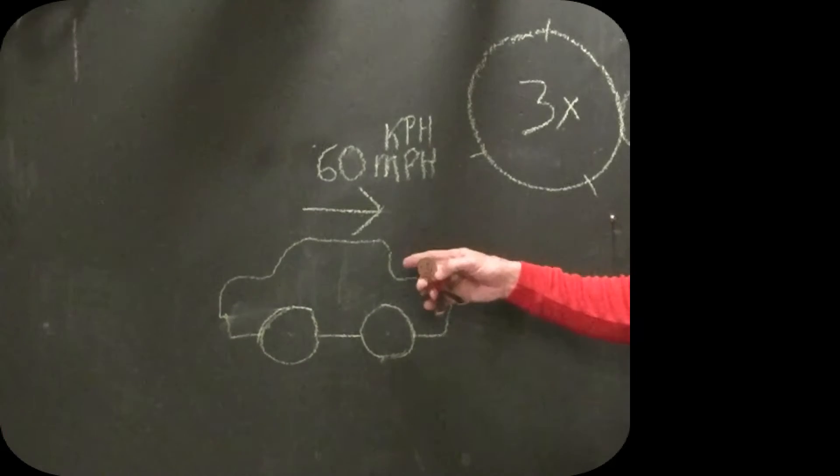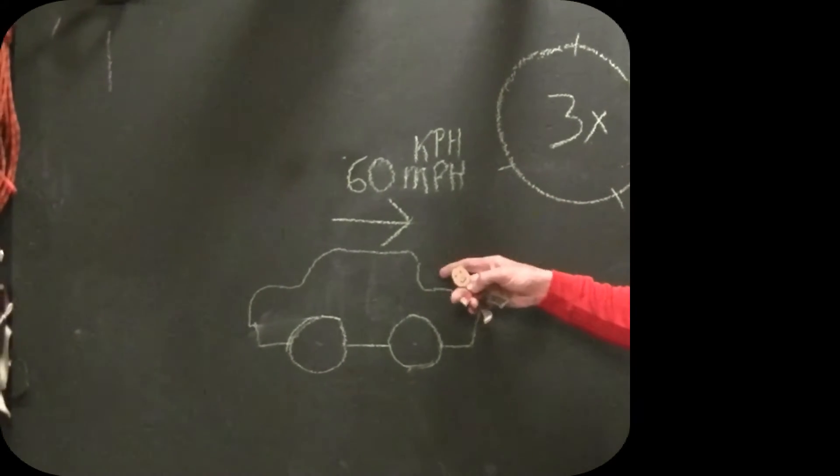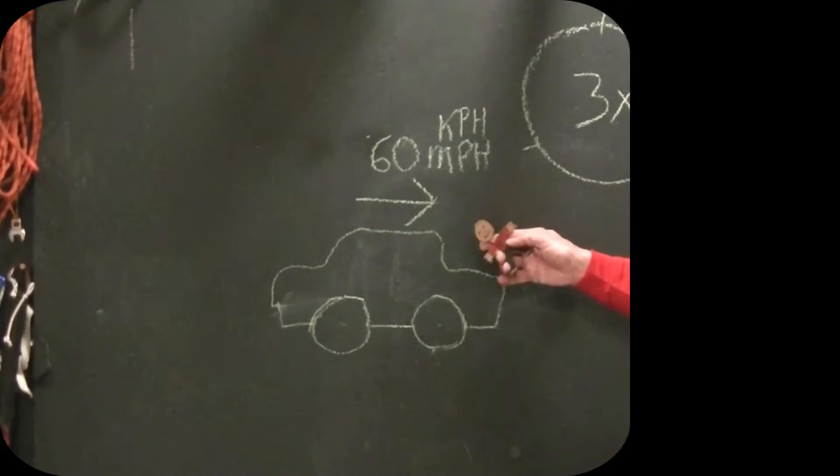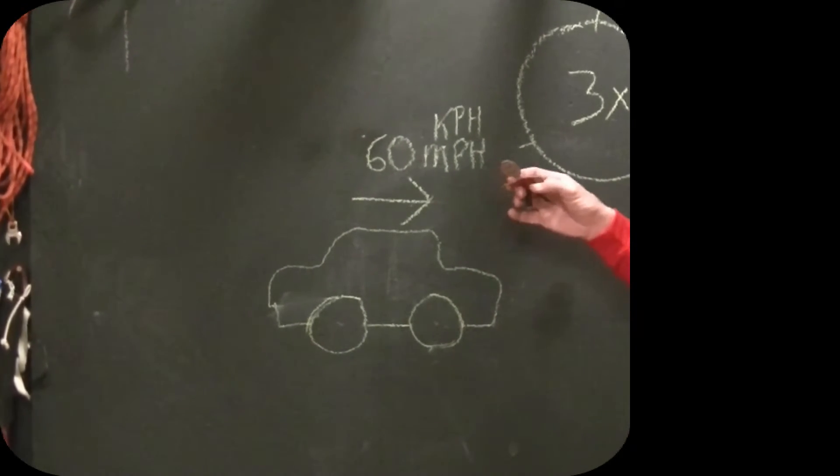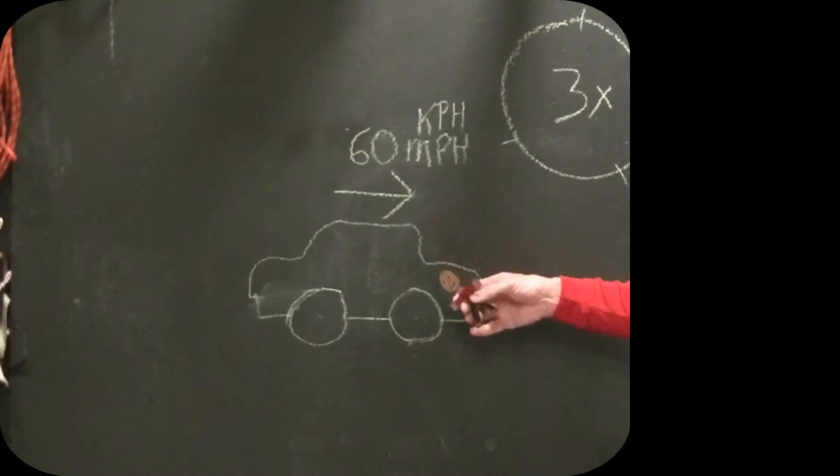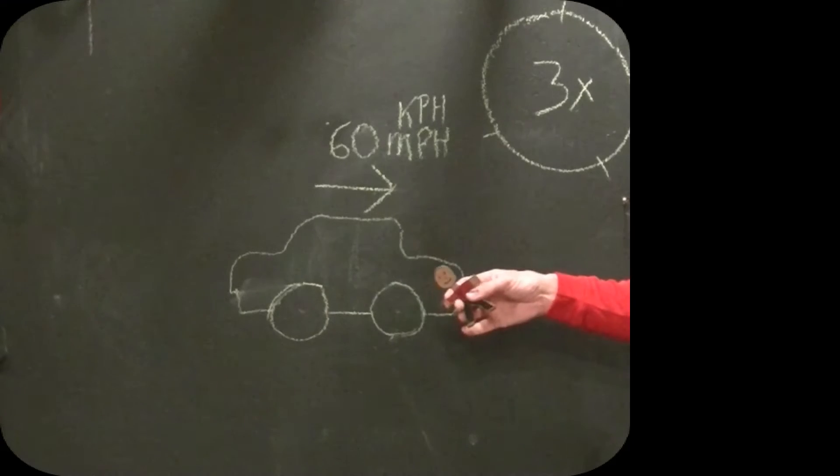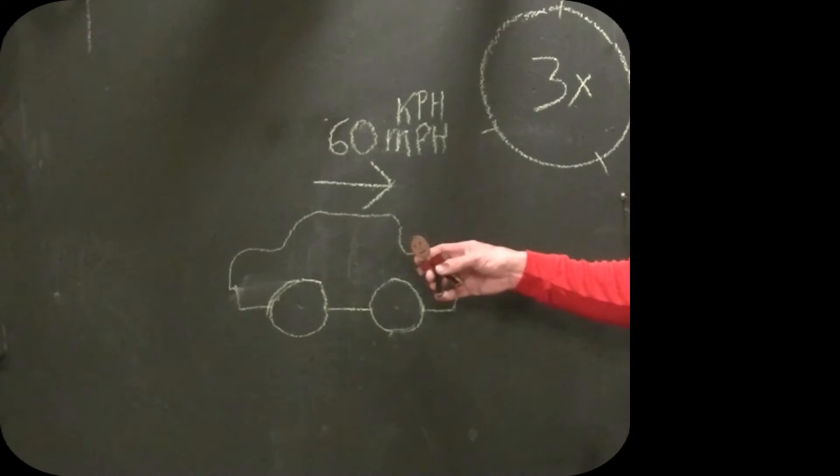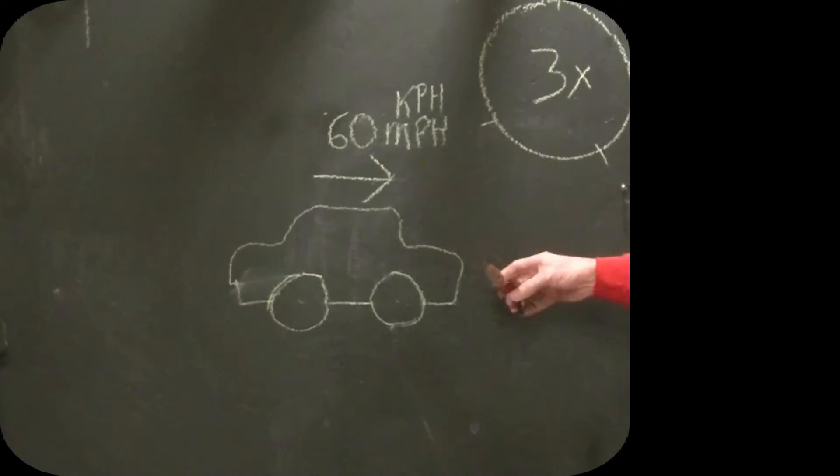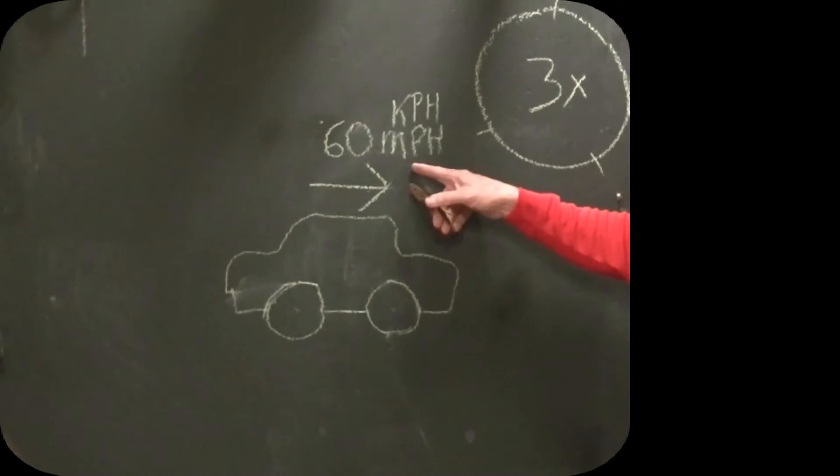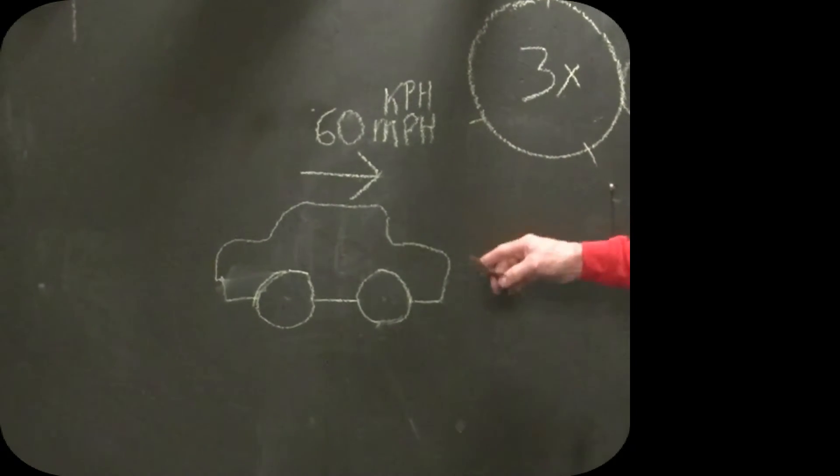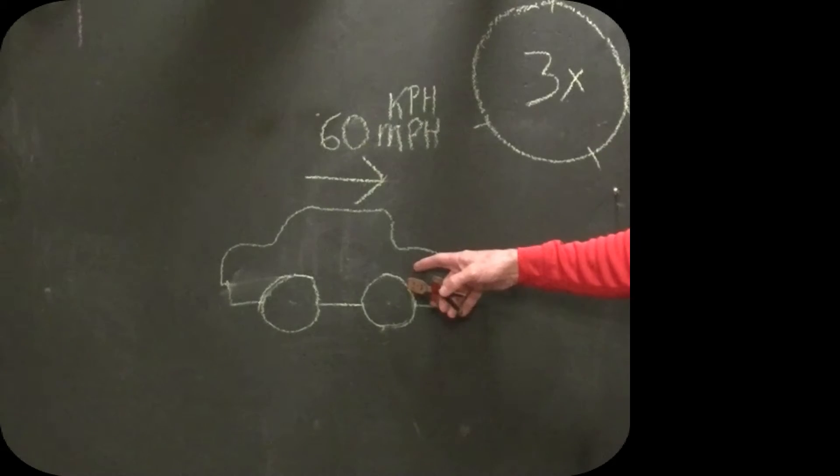So I have an analogy of a car, and the whole point of this analogy is to point out that the answer that you get depends on the relativity of the question. In other words, relative to something else. So you can have a bunch of different answers depending on what the question is. So if this car is going 60 miles an hour, we know that the car is traveling at 60 miles an hour.